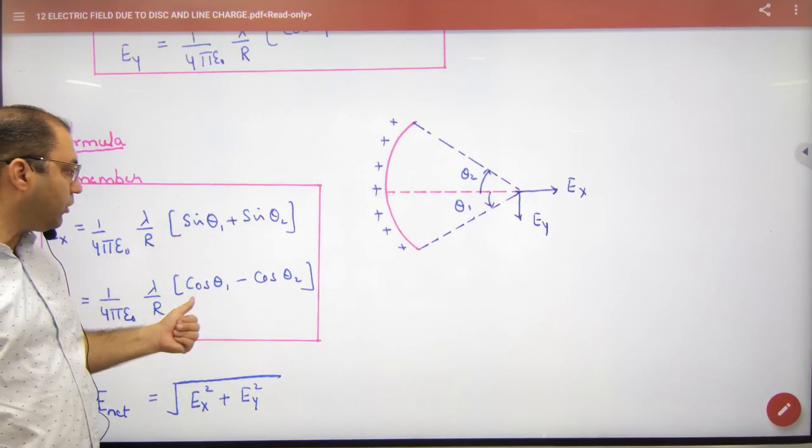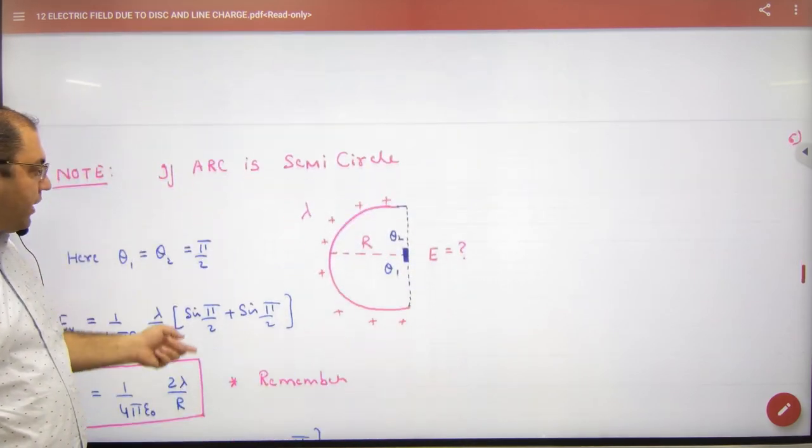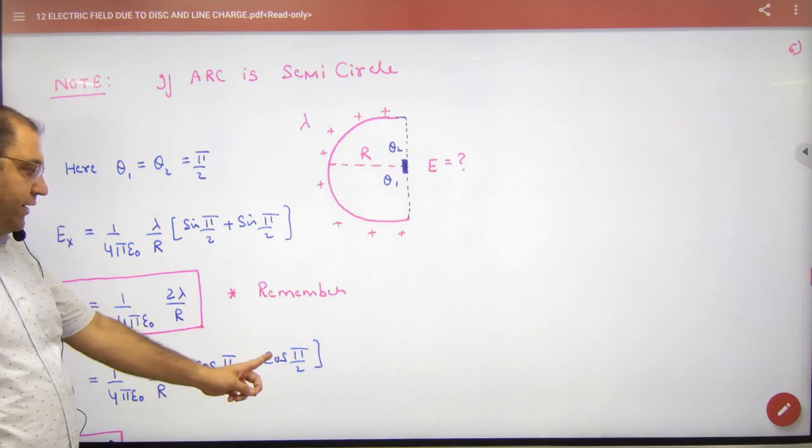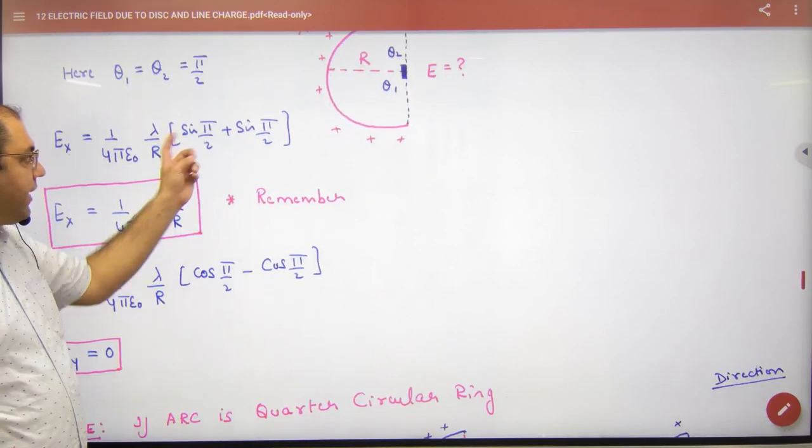Let's work. Theta 1, Theta 2. What will we put? 90 and 90. So when you put 90 and 90, then what will happen?